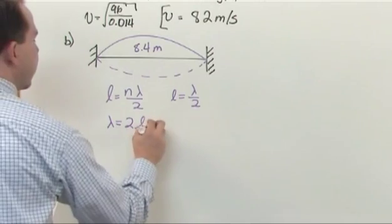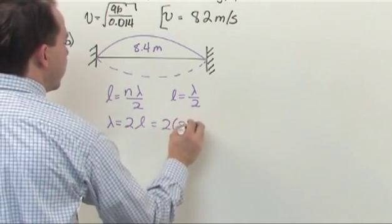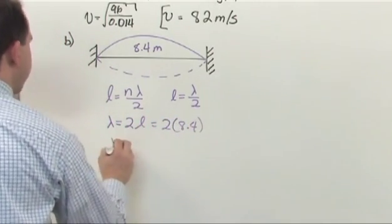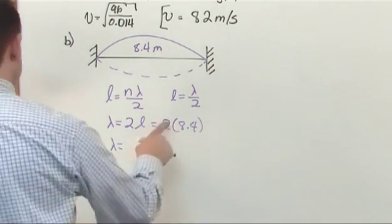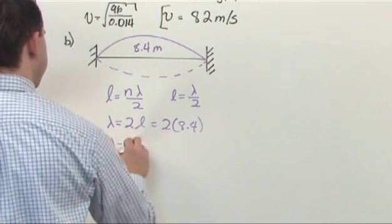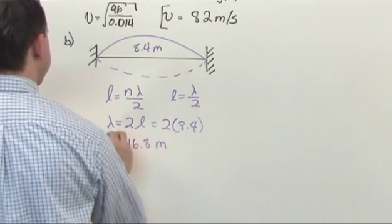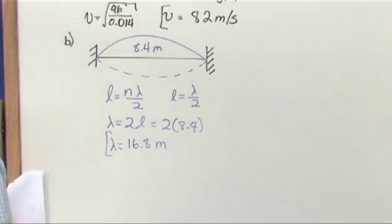So if we put the length of the string in, 2 times 8.4, then the longest wavelength possible for a standing wave here would be 2 times 8.4, which would be 16.8 meters.